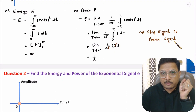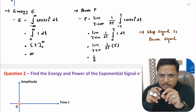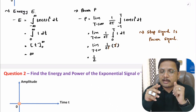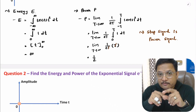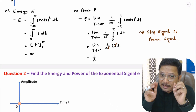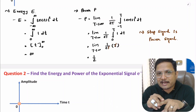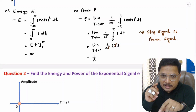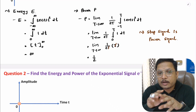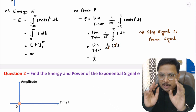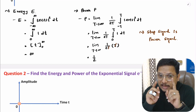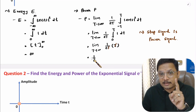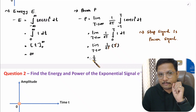So here we have finite power that is half, and energy is infinite. This means the given signal is a power signal. One should know the step signal is a power signal — it is not an energy signal. I am writing this because sometimes there can be an MCQ in competitive examination where students think that only periodic signals are power signals, but that is a misconception. With the step signal, we don't have a periodic signal, yet energy is infinite and power is half. That's why unit step signal is a power signal.